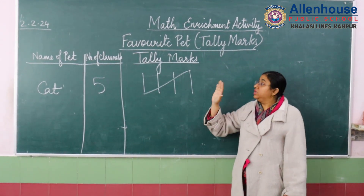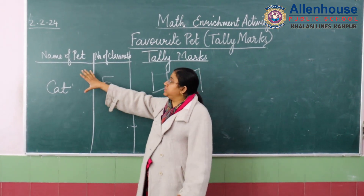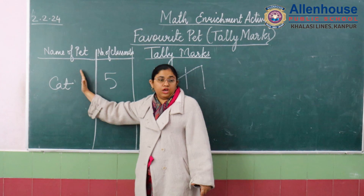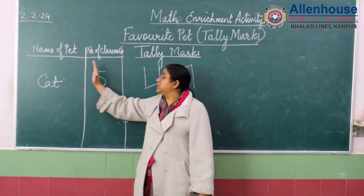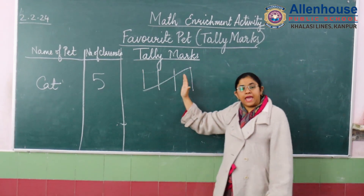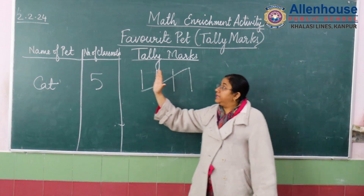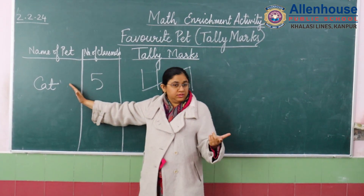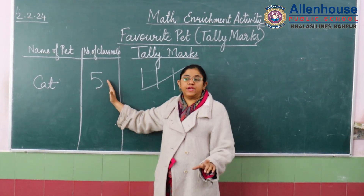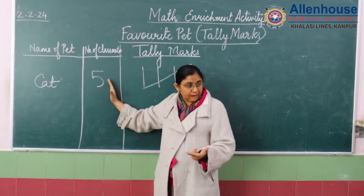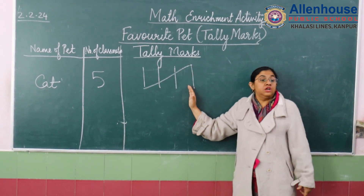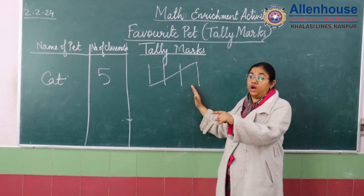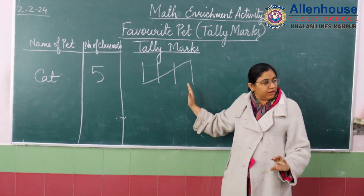Now what are you going to do? You are going to divide. You know how to make tally marks — you will divide the chart into three columns: name of pet, number of classmates, and tally marks. Here you will write the name of the pet you have chosen, then how many classmates like those pets, and then you will draw tally marks using the math sticks or toothpicks whatever you have brought.